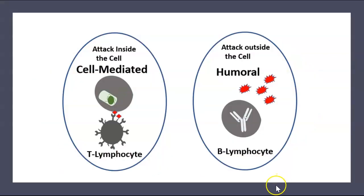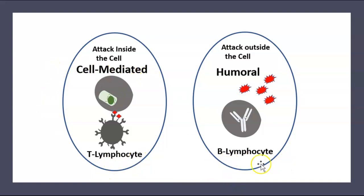The difference between T lymphocytes and B lymphocytes is that T lymphocytes are cell-mediated, and B lymphocytes are humoral. B lymphocytes are responsible for humoral immunity because they secrete circulating antibodies.